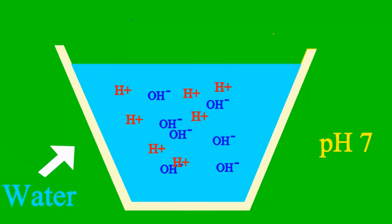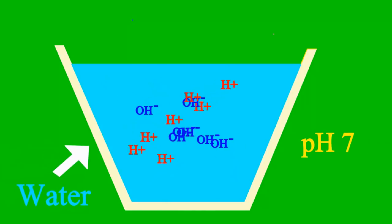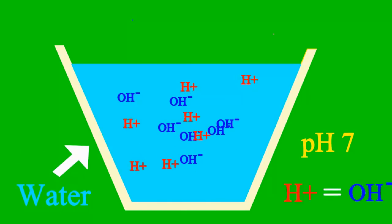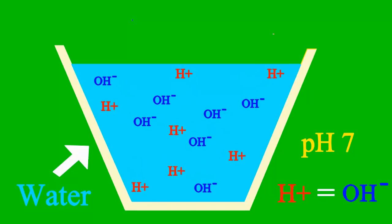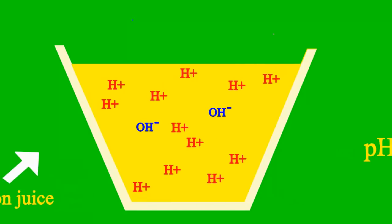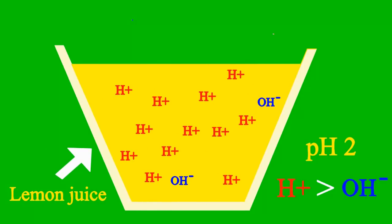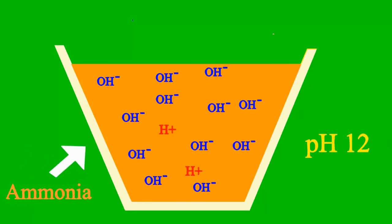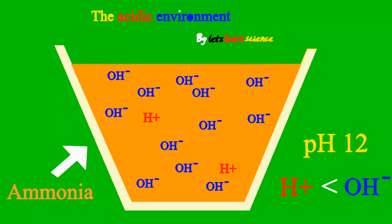When the pH is 7, it's a case where the sample is neither acid nor base. But less than 7 is acidic, and more than 7 is a base all the way.